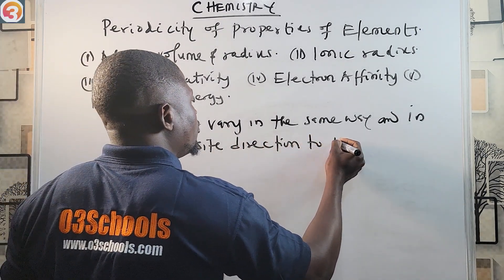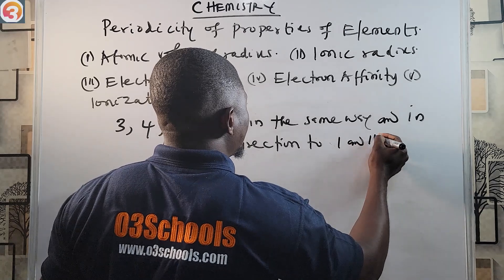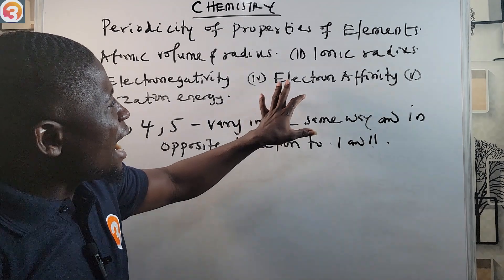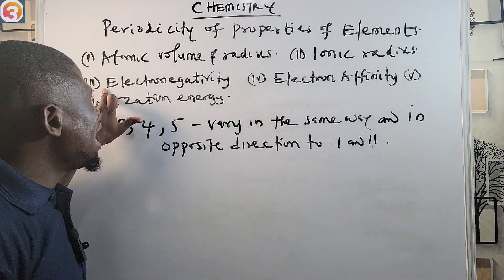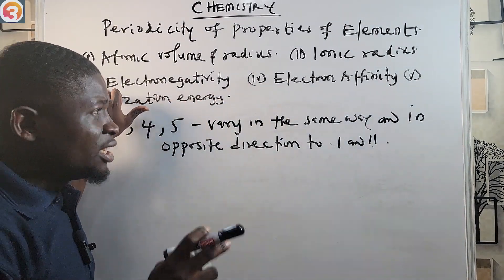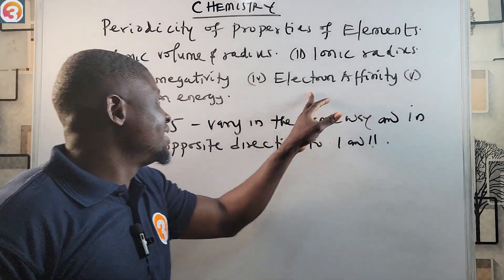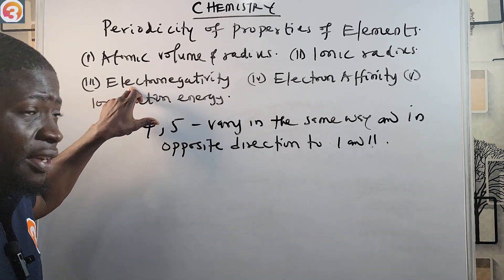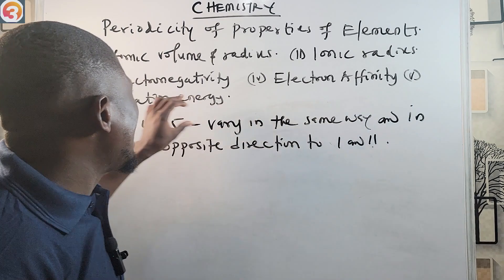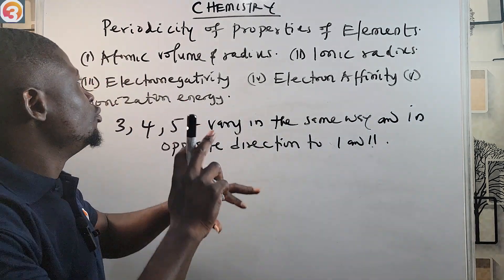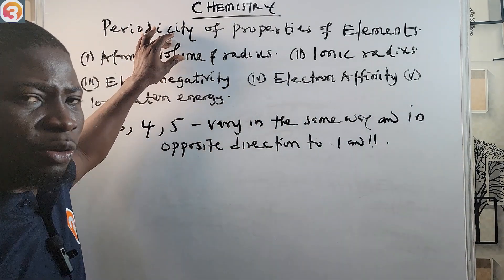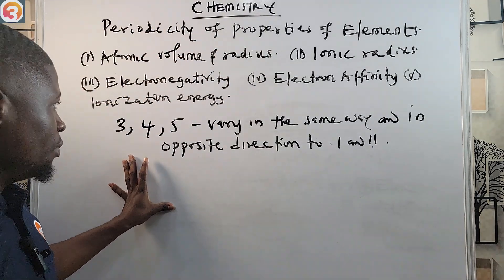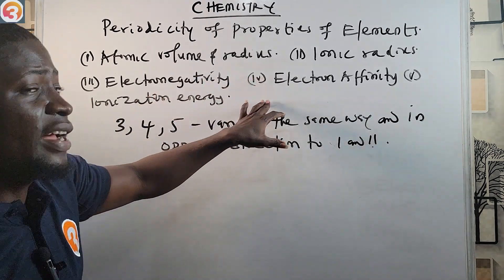So three, four, and five vary in the same way and in the opposite direction to one and two. That means if you know how electronegativity varies, you apply the same to electron affinity and ionization energy, and the opposite will apply for atomic volume and radius.